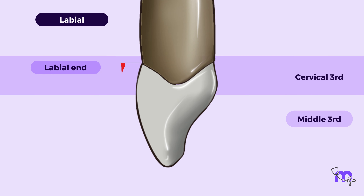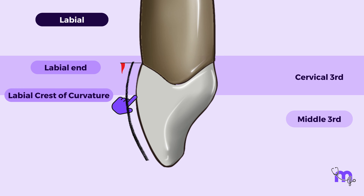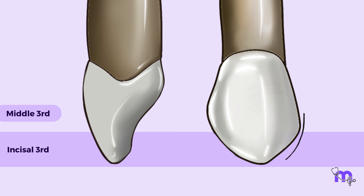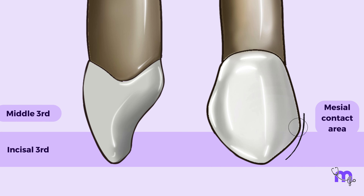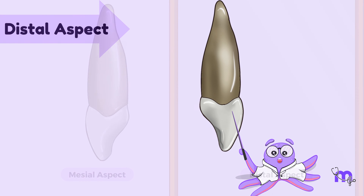Let's observe the lingual surface. Unlike the incisor's lingual fossa — imagined as a single lake bounded by ridges — the canine has a walkway in the middle, giving the lingual surface two prominent fosse. The cervical boundary of the fosse is bounded by a very well-developed cingulum. On either side, prominent mesial and distal marginal ridges converge at the cusp tip. In addition, there is a walkway connecting the cusp tip and the cingulum called the lingual ridge. This well-developed ridge divides the lingual fossa into two shallow fosse — the mesial and distal lingual fosse. However, variations exist, and in some instances the lingual surface appears smooth, making it challenging to distinguish the fosse and ridges as they are confluent.